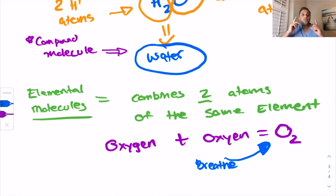Same thing with the ozone layer. There's three oxygens in the ozone layer. There makes O3 and the ozone helps us protect us from the UV radiation of the sun. So these are elemental molecules versus a compound molecule, which is like water.